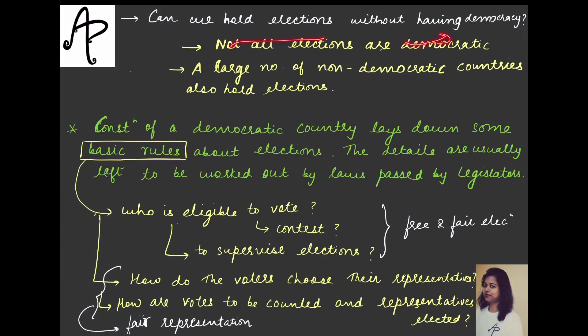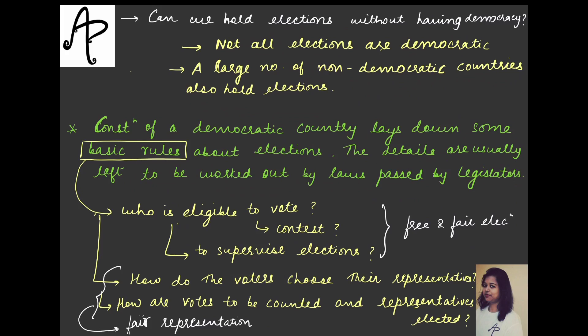Can we hold elections without having democracy? Yes — not all elections are democratic. Many non-democratic countries, including those ruled by dictators, also hold elections to portray legitimacy. Therefore a large number of non-democratic countries also hold elections. The constitution of a democratic country lays down basic rules about elections, and details are usually left to be worked out by laws passed by legislatures.